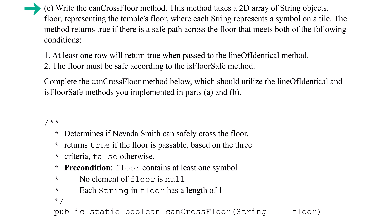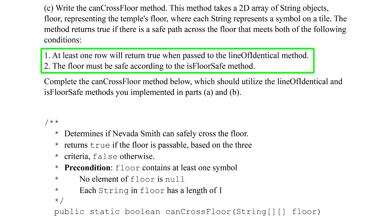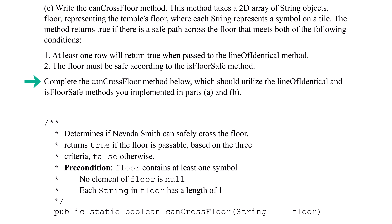Part C: Write the CanCrossFloor method. This method takes a 2D array of string objects, floor, representing the Temple's floor, where each string represents a symbol on a tile. The method returns true if there is a safe path across the floor that meets both of the following conditions: 1. At least one row will return true when passed to the LineOfIdentical method. 2. The floor must be safe according to the IsFloorSafe method. Complete the CanCrossFloor method, which should utilize the LineOfIdentical and IsFloorSafe methods you implemented in Parts A and B. Pause here and complete the problem.